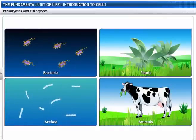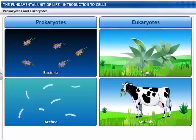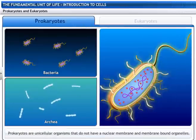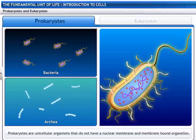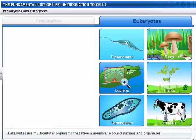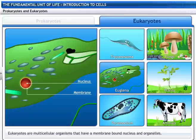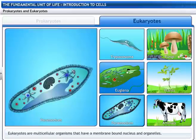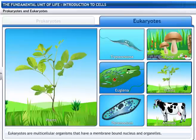Living organisms are also classified as prokaryotes and eukaryotes based on the organization of cellular structure. Prokaryotes are unicellular organisms that do not have a nuclear membrane and membrane-bound organelles — for example, bacteria and archaea. Eukaryotes are characterized by membrane-bound nucleus and organelles. Eukaryotes can be unicellular such as trypanosoma, euglena, and paramecium, or multicellular such as fungi, plants and animals.